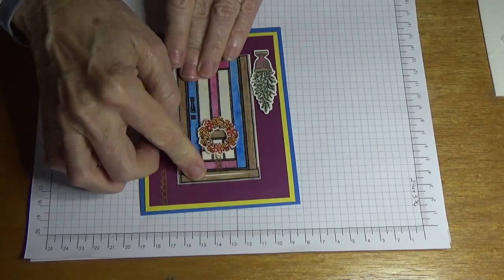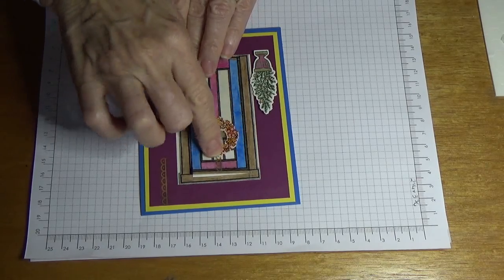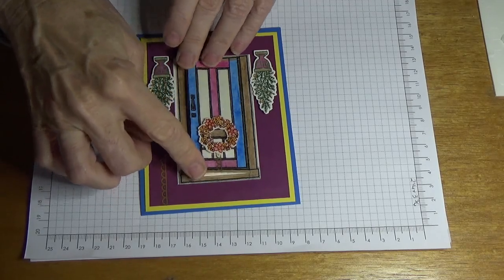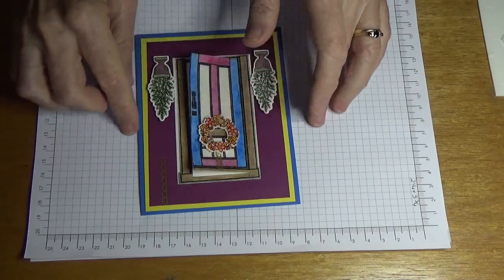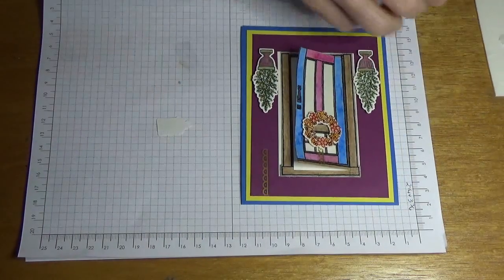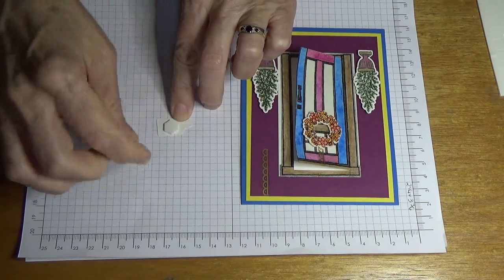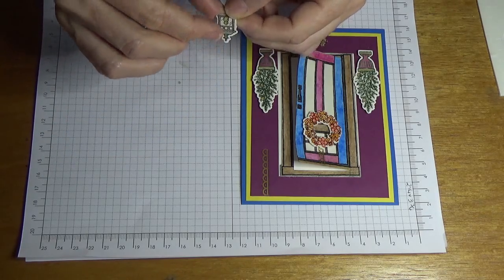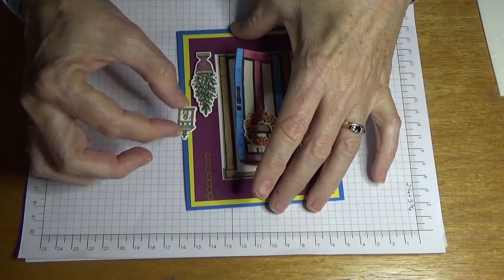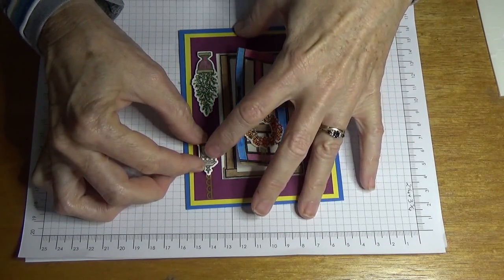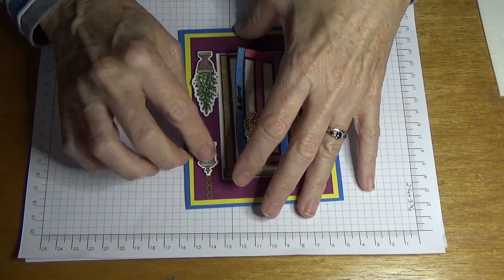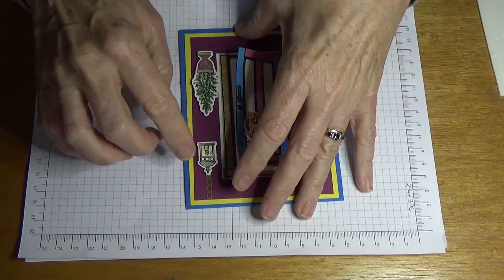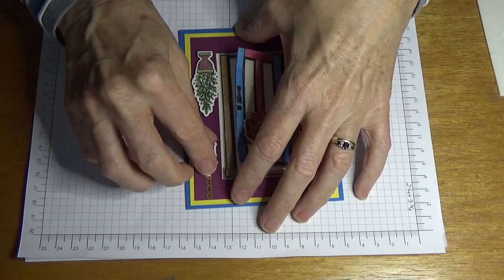And the only reason my door curled up a bit is because I had embossed it, which it will flatten down eventually. Then all I need to do is just pop the dimensional on the back for my lamp. And I'm just going to position it there, just on top of those vinyl stickers, like that. And that's your other type of card that you can make with the At Home With You bundle.